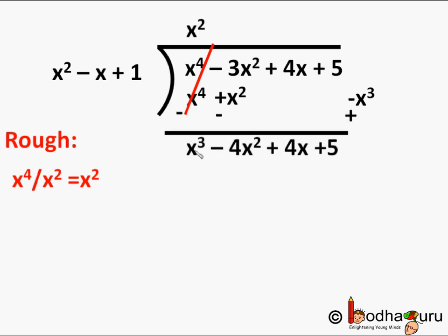We are subtracting minus x³. Since there is no x³ term in the original dividend, it becomes 0 minus of minus x³, which equals plus x³. Then minus 3x² minus x² becomes minus 4x², and 4x plus 5 comes down. So the remaining dividend is x³ minus 4x² plus 4x plus 5.